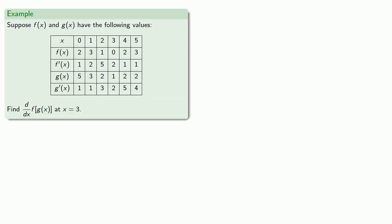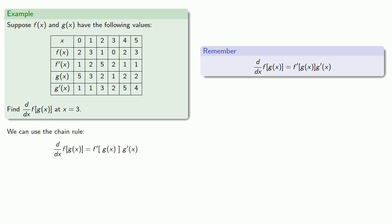So one possibility is we might have a table of values of a function and its derivatives. We might have such information and we might want to find the derivative of a composite function. We can still apply the chain rule. Remember the derivative of f of g of x is the derivative of f evaluated at g of x times the derivative of g of x. And so we can write down our derivative.